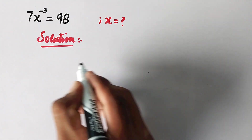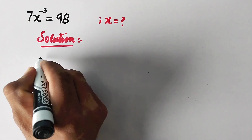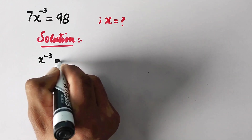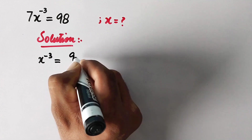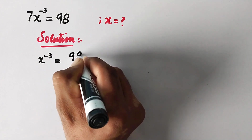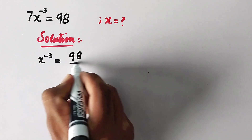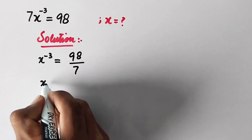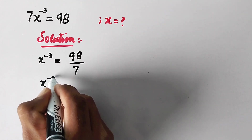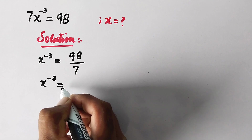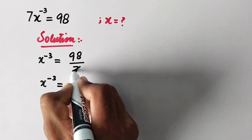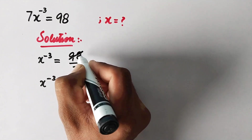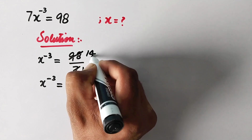In the first step, we can write x to the power minus 3 is equal to 98 divided by 7, since 7 will be divided to the other side. This implies that x to the power minus 3 is equal to 14, since 98 divided by 7 is 14.